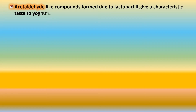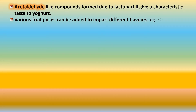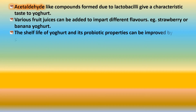Some compounds like acetaldehyde are formed due to Lactobacillus and they give yogurt its characteristic tangy taste. Various fruit juices can be added to impart different flavors — strawberry, banana, vanilla, and many other types of yogurt. The shelf life and probiotic properties of yogurt can be improved by pasteurization, making pasteurization a very important process in the production of dairy products.